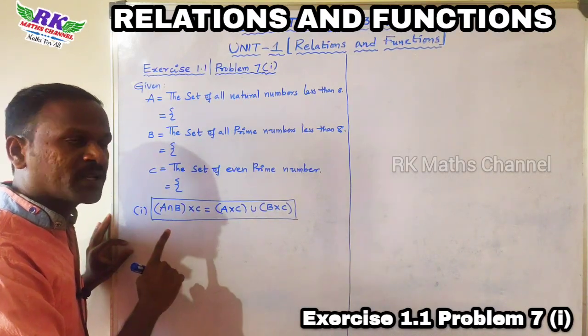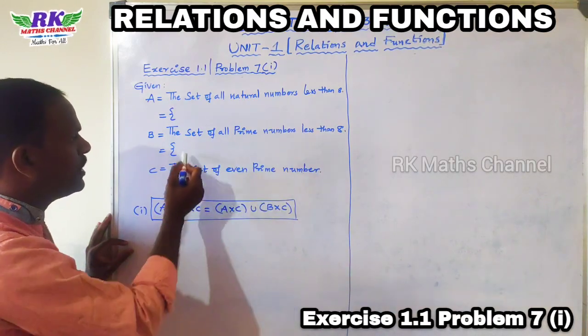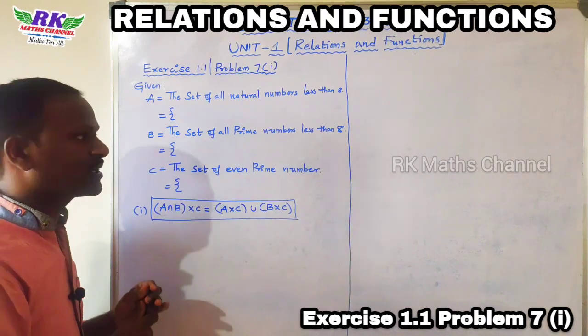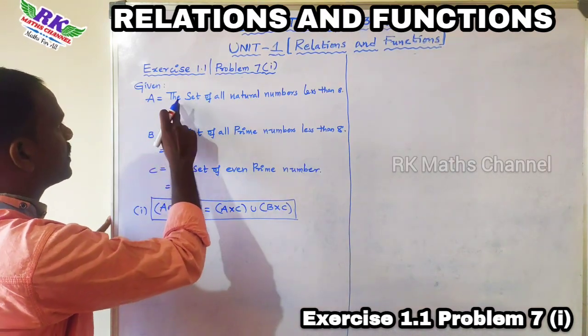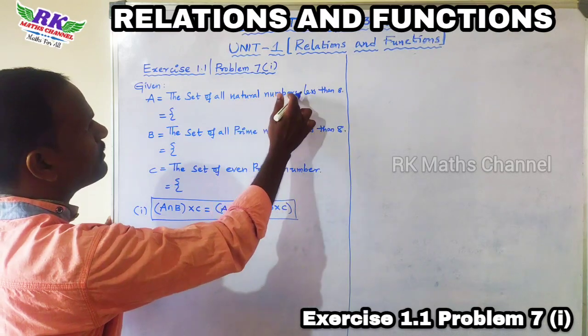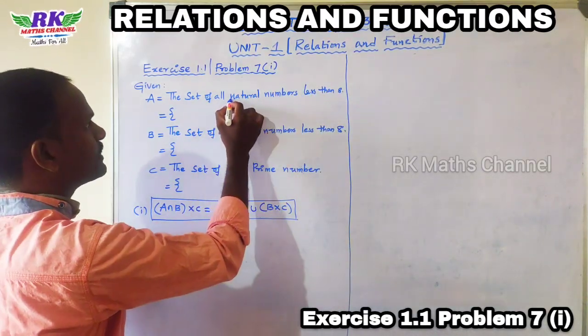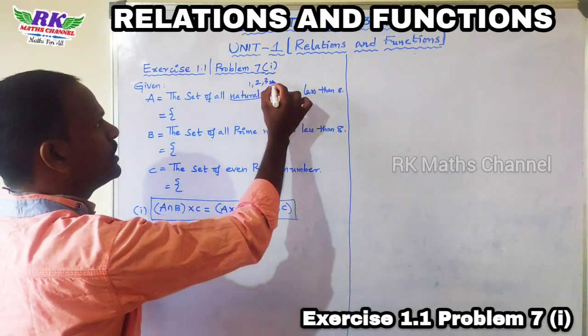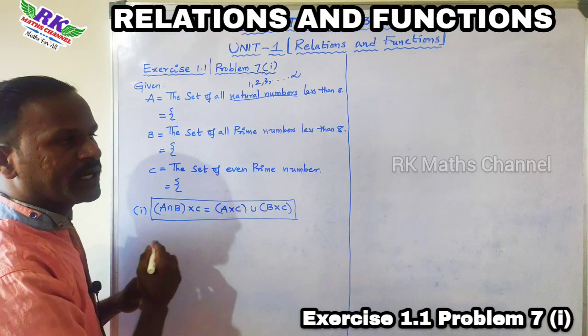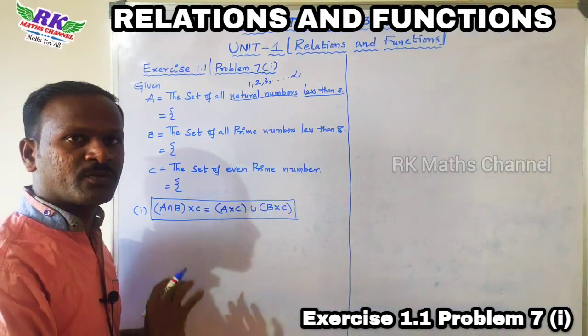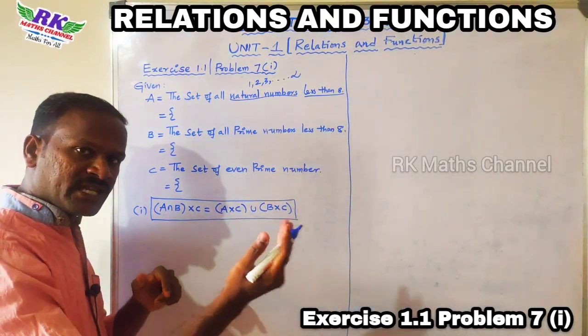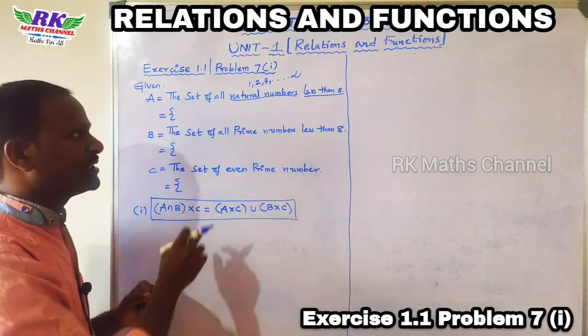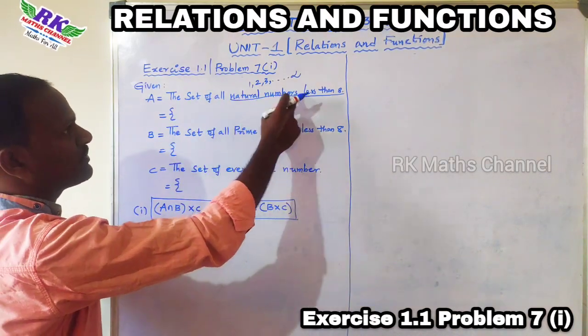First topic: the set of all natural numbers less than 8. Natural numbers start from one: 1, 2, 3, 4, and continue up to infinity. The set of all natural numbers less than 8.